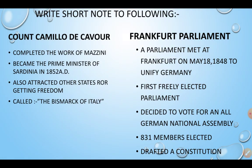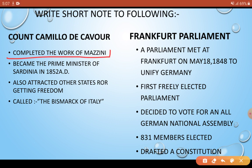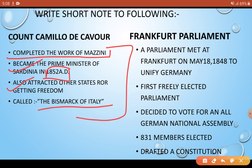Now come to the second question — you need to write a note on Cavour and the Frankfurt Parliament. Regarding Cavour, he attracted many other states to merge into Italy and he is called the Bismarck of Italy. That's enough for Cavour. For the Frankfurt Parliament: it was convened in 1848 to unify Germany; it was the first freely elected parliament. A German National Assembly was formed with 831 elected members, and they drafted a constitution.